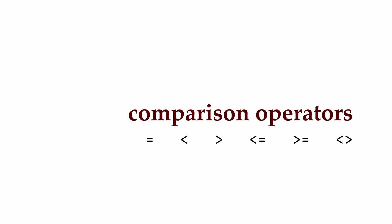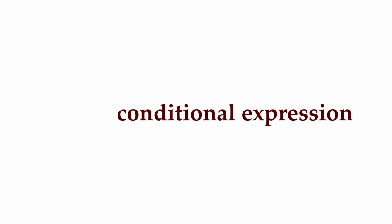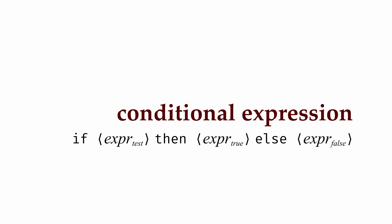We couldn't compare an int and a float for equality in this way, for instance. One of the most important uses for truth values is to conditionally compute different values. If an expression is true, we might want one value to be computed; if an expression is false, we might want another value. To achieve this, we can use an OCaml conditional expression, which takes the form: if expression_test then expression_true else expression_false. If the test expression is true, the whole expression evaluates to the value of expression_true; if it's false, the whole expression evaluates to the value of expression_false.